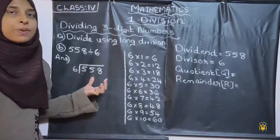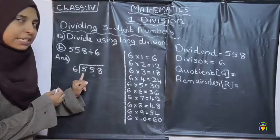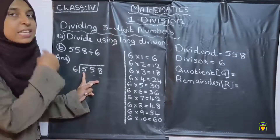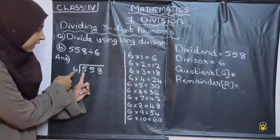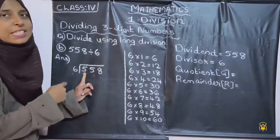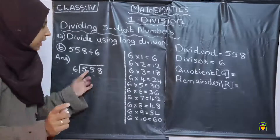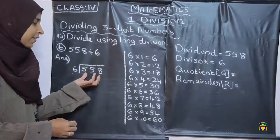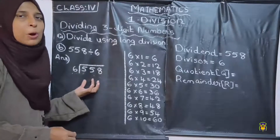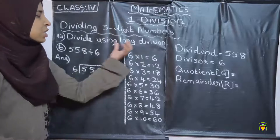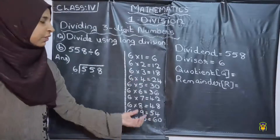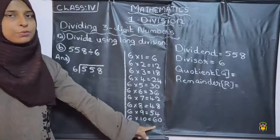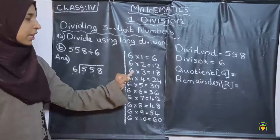Then what do you want to do first? You want to check the first digit. The first digit here is 5. You want to check whether it is greater than or equal to the divisor. Here, 5 is less than the divisor, so we want to take 2 digits. That is 55. 55 is greater than the divisor, so no problem, we can divide. Check in the multiplication table whether we are getting 55 as the product — no, 55 is not a product in the multiplication table of 6.